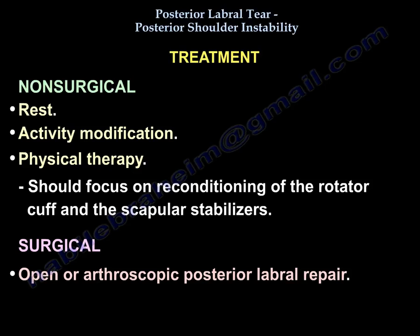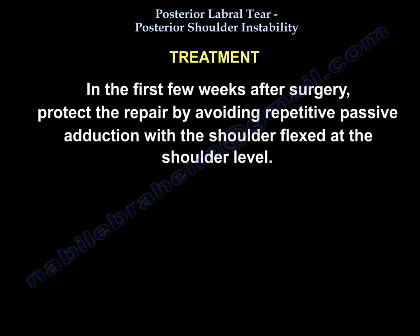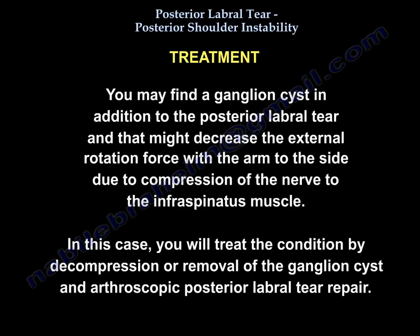Surgery involves open or arthroscopic posterior labral repair. In the first few weeks after surgery, protect the repair by avoiding repetitive passive adduction with the shoulder flexed at shoulder level. You may find a ganglion cyst in addition to the posterior labral tear, which might decrease external rotation force with the arm at the side due to compression of the nerve to the infraspinatus muscle. In this case, treatment involves decompression or removal of the ganglion cyst and arthroscopic posterior labral repair.